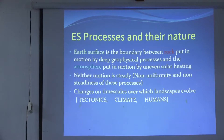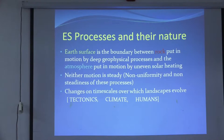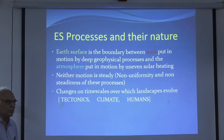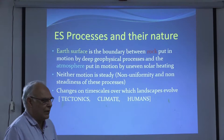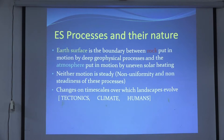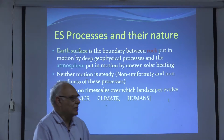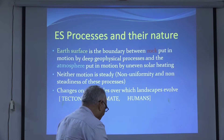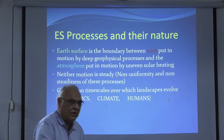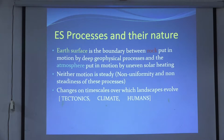The Earth's surface is the boundary between rock put in motion by deep geophysical processes — thermomechanical motions within the Earth, gravitational heat, radioactive heat — and the atmosphere put in motion by the solar heating process. Neither motion is steady; the non-uniformity of these processes creates complexity. The timescales on which tectonic processes operate and climate processes operate are very different, and human timescales are again different — so there are three intersecting timescales for anything that happens at the Earth's surface.